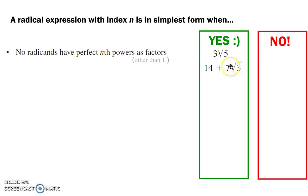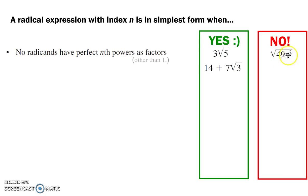Same with this expression here — 3 is not a perfect square. Under this radical, which is a square root, 49 is a perfect square, so I can simplify that. x to the third is x squared times x, so I could still simplify that. Here's another example: 36 is 6 squared, so that's not in simplest form.